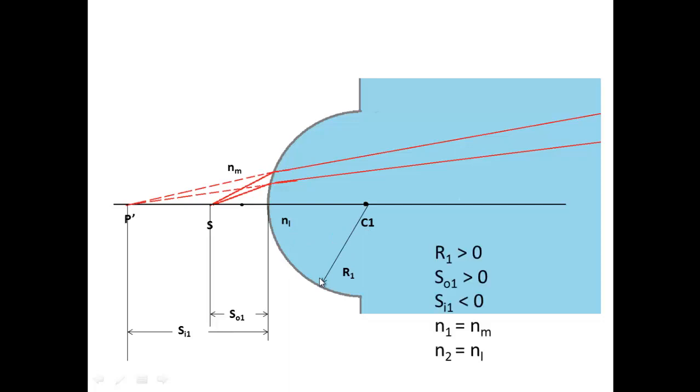In our case the radius is positive, the object distance is also positive, and the image distance being back here to the left of the lens is going to be negative. And N1 of the medium we're entering from is going to be the medium which is often air, and then we have the lens for N2.